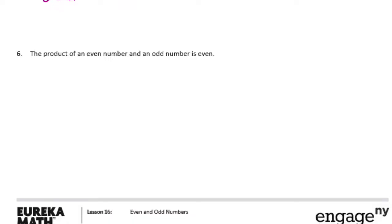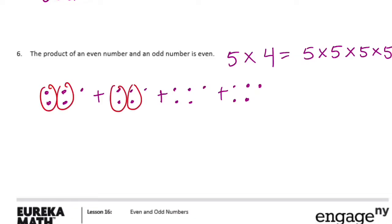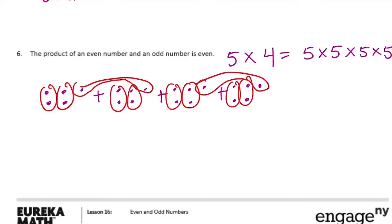Number six: the product of an even number and an odd number is even. Let's try 5 times 4 — an odd times an even. That's five plus five plus five plus five. Draw it out and group into pairs — these two go together and these two go together. There are no leftovers. So even times odd equals even.